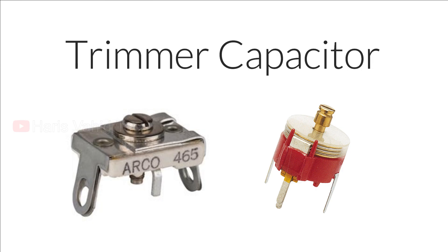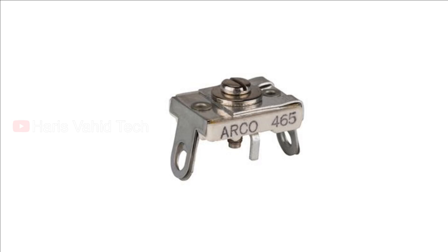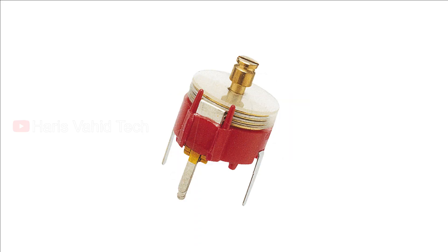Trimmer capacitors are variable capacitors used for initial calibration of equipment during manufacturing or servicing, similar to preset variable resistors. They are not intended for end-user interaction and are almost always mounted directly on the PCB — the user does not have access to them. Their values are set during manufacturing using a small screwdriver. Trimmer capacitors are used to set oscillator frequency values, latencies, rise and fall times, and other variables in circuits, and allow repairmen to recalibrate equipment when values drift over time.